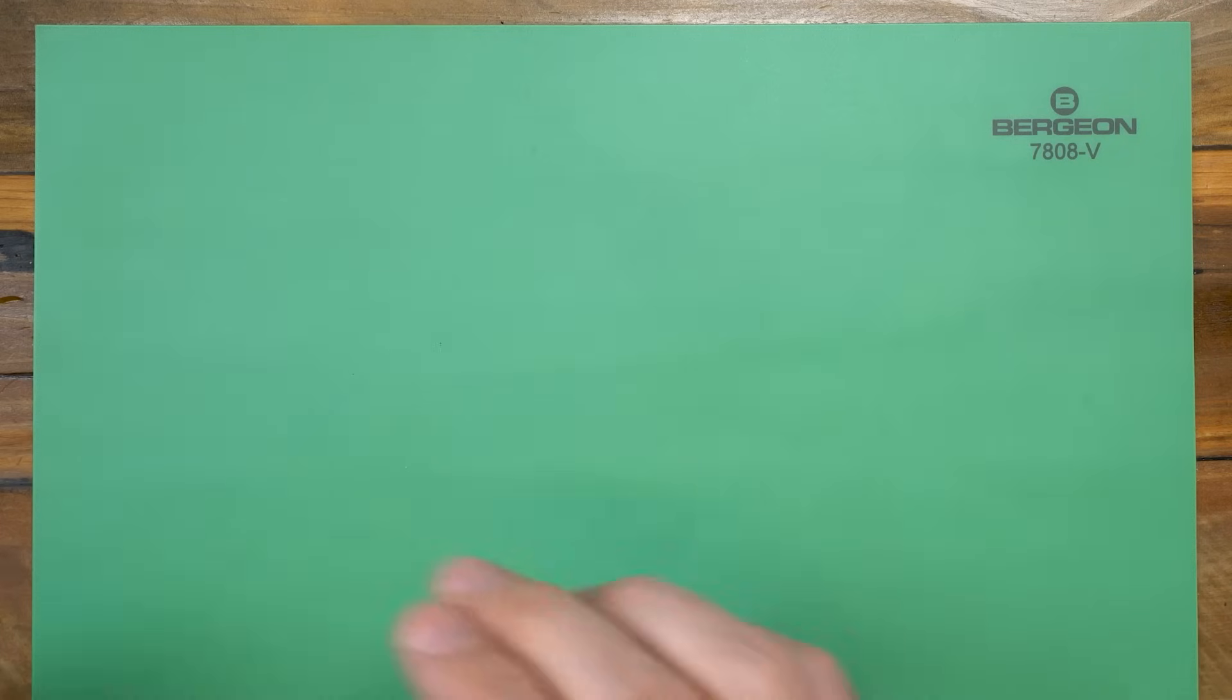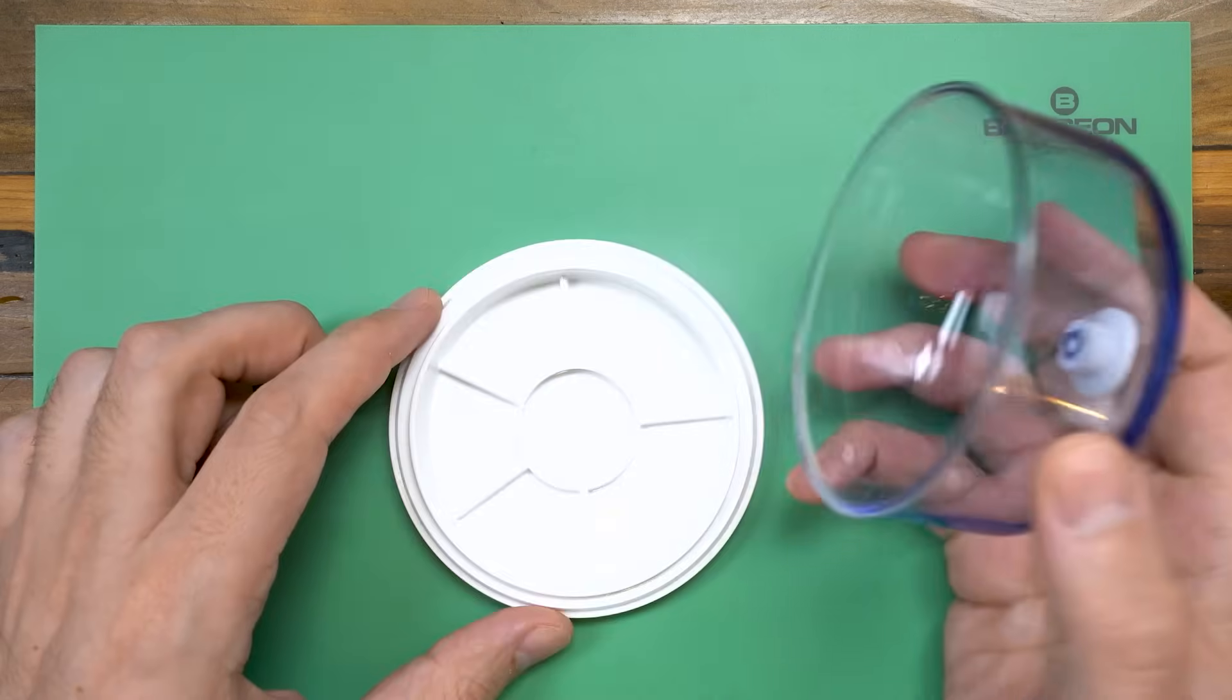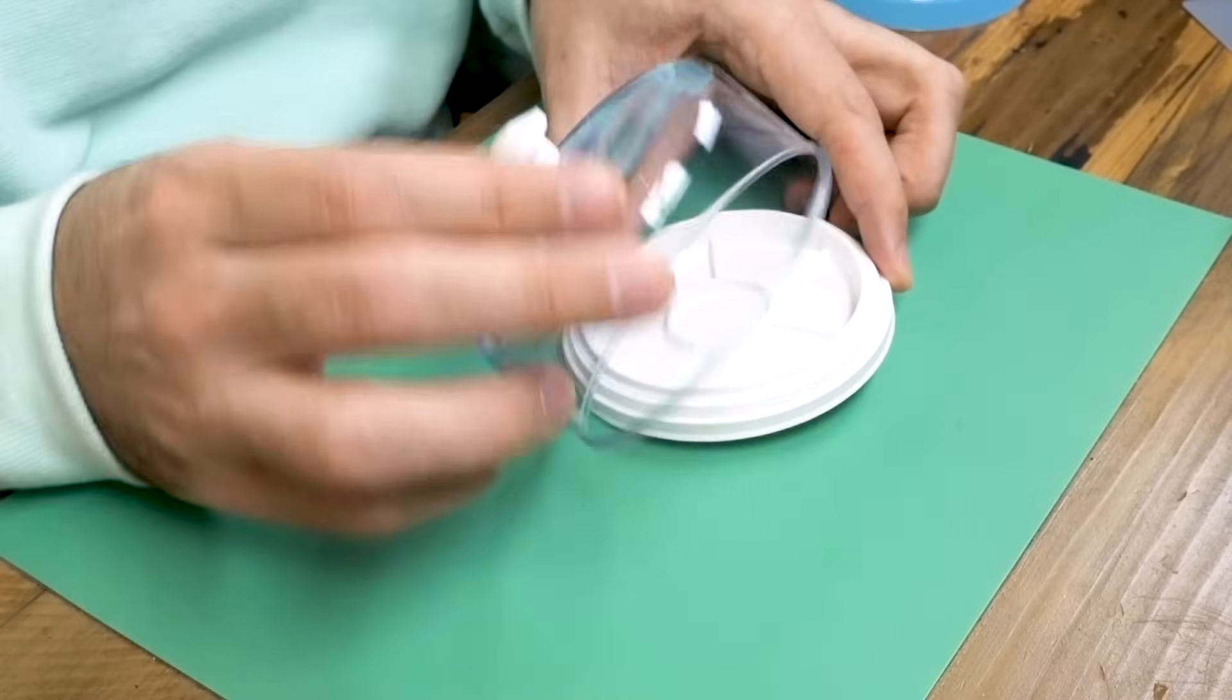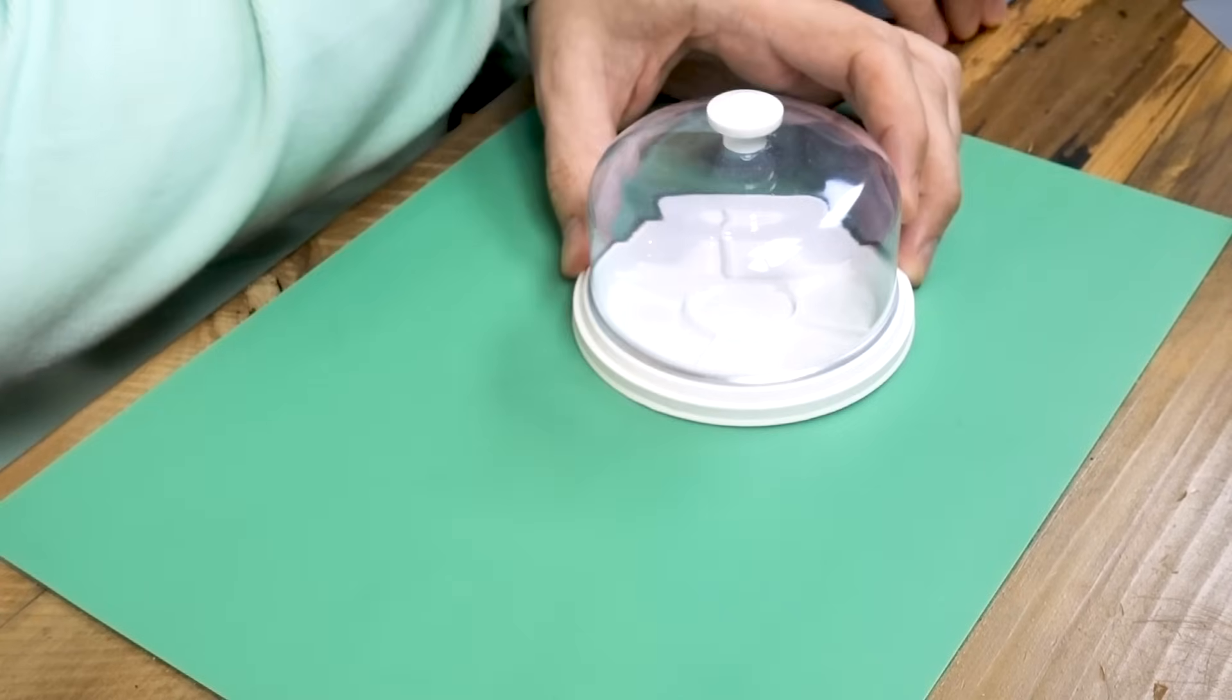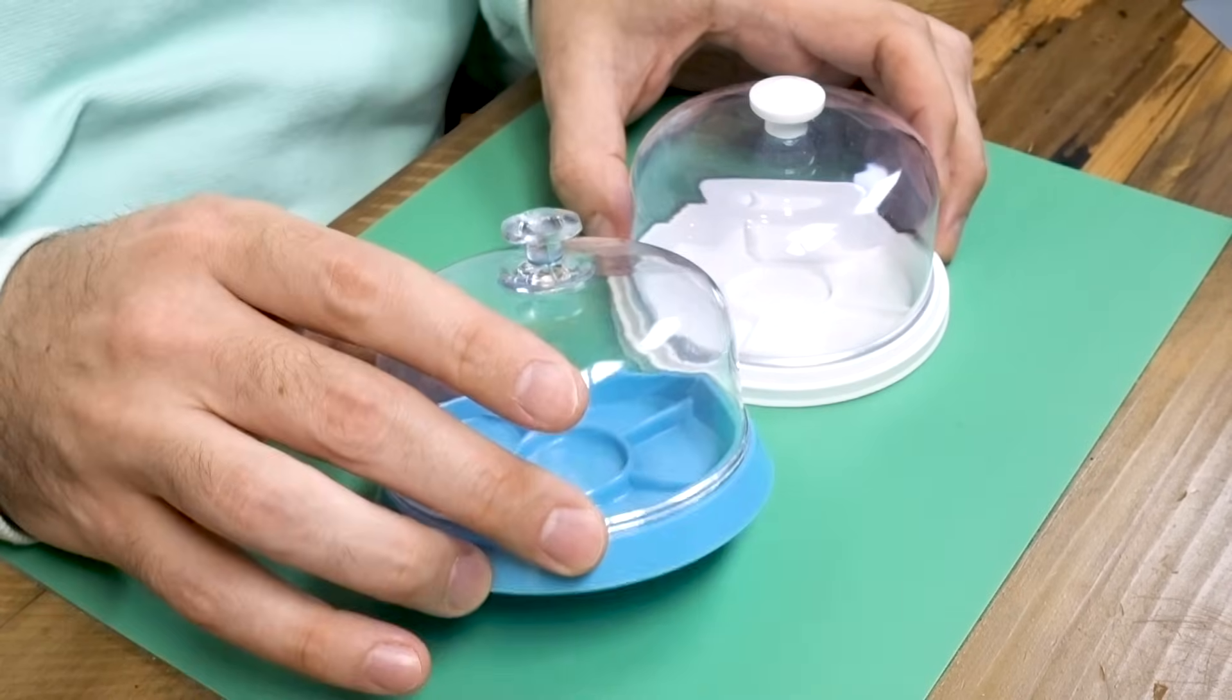As you work on the movement, you'll need a tray to keep the parts together as well as a cover to keep the dust off of it. Bergeon makes high quality ones for nineteen dollars, but you can definitely just get the generic one here for five bucks as they do exactly the same job.